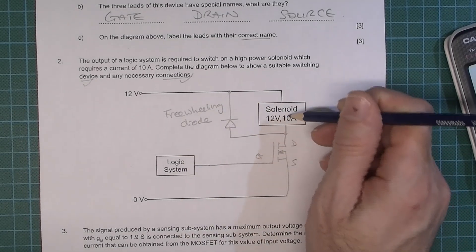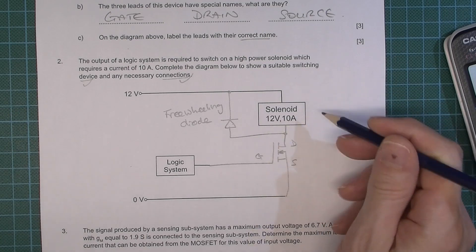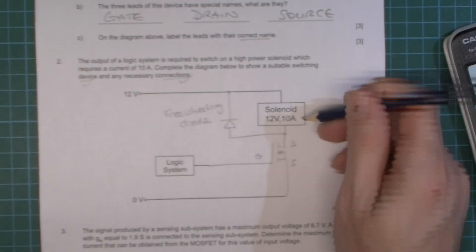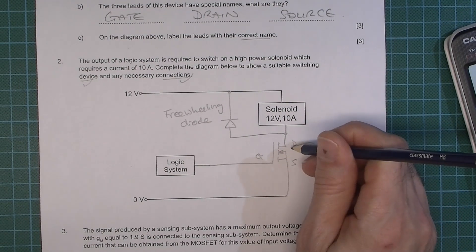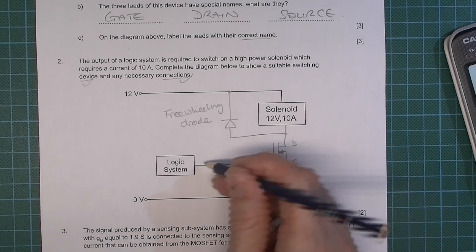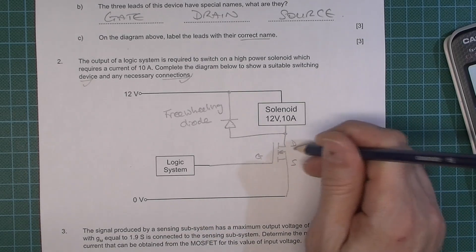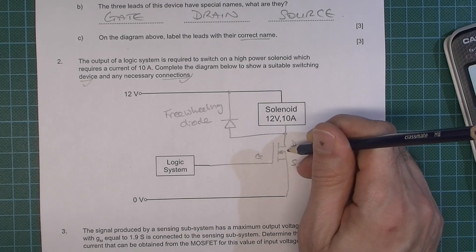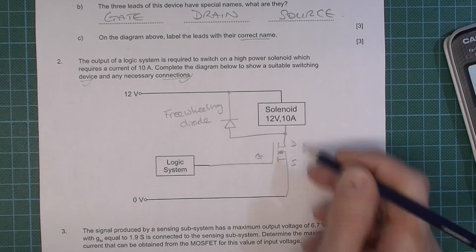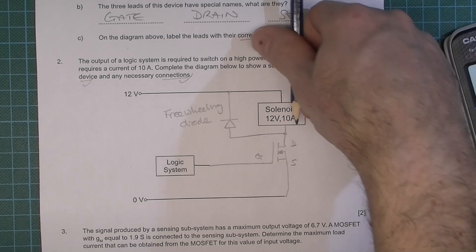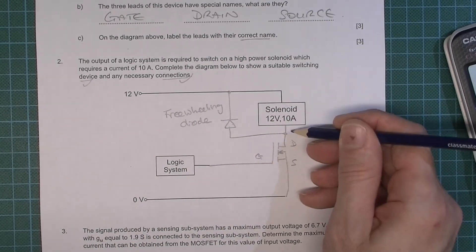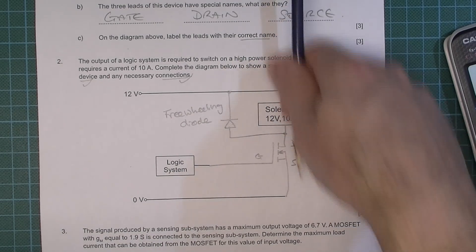When the solenoid or the coil is powered up there is magnetic energy in there and when you then turn the signal low, so from the logic system, so the MOSFET is going to be entering cutoff, so it's going to act as an open switch.